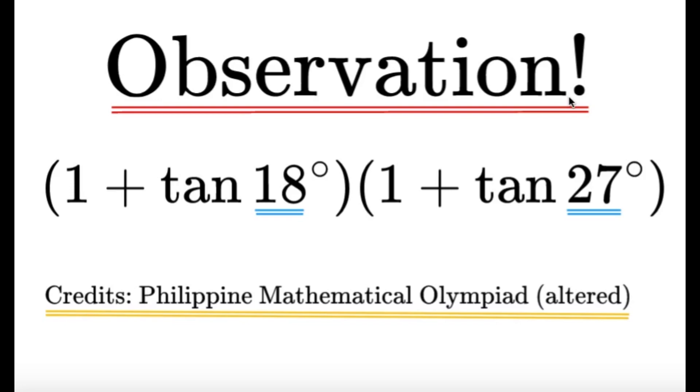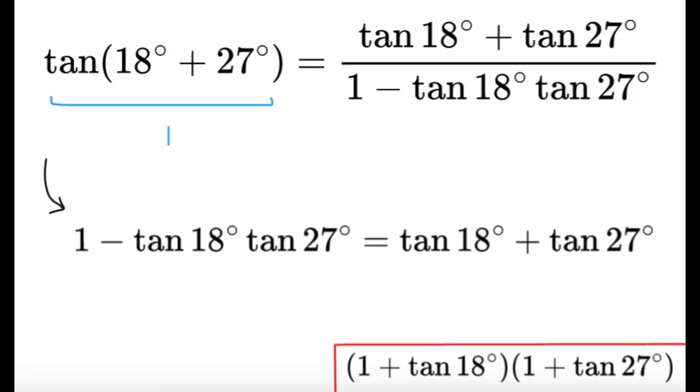Now, the observation here to make is that 18 and 27, if we add them, that's going to be 45 degrees. And 45 is indeed a special angle. So, the tangent of 45, at least, it's a better value than probably tangent 18 and tangent 27 degrees. And apparently we're adding them. So, I think we're motivated to do the following.